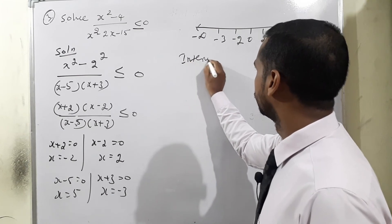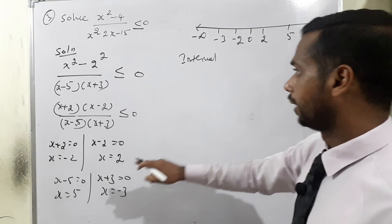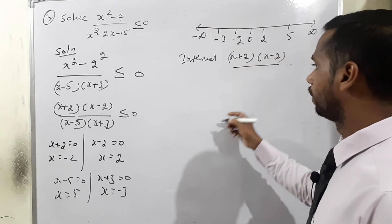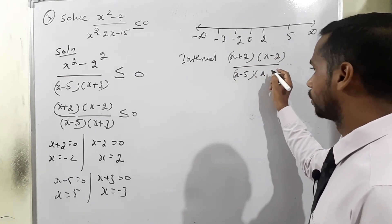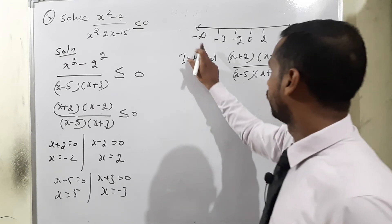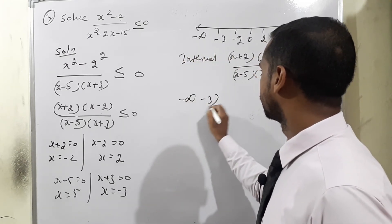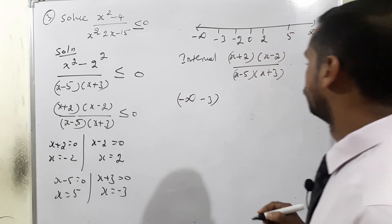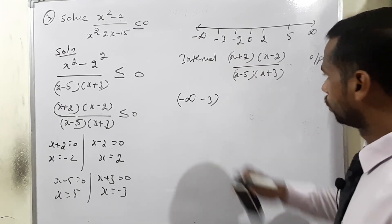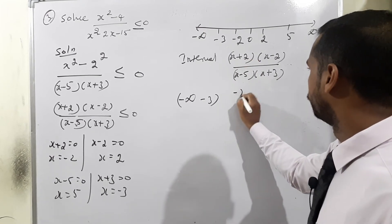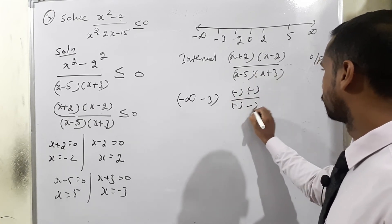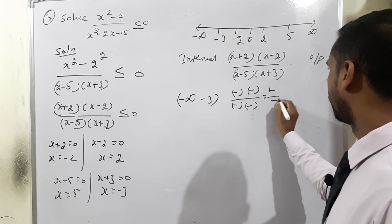Testing: interval (-∞,-3), take x=-4: (+)(-)/((-)(+)) = (-)/(-) = positive. Interval (-3,-2), take x=-2.5: (-)(-)/((-)(+)) = (+)/(-) = negative. Interval (-2,2), take x=0: (+)(-)/((-)(+)) = (-)/(-) = positive. Interval (2,5), take x=3: (+)(+)/((−)(+)) = (+)/(−) = negative. Interval (5,+∞), take x=6: all positive, output positive.